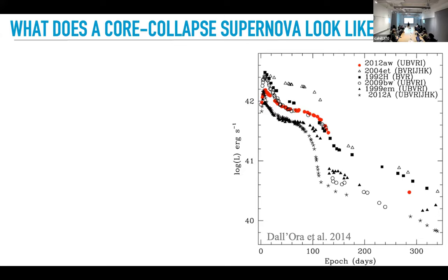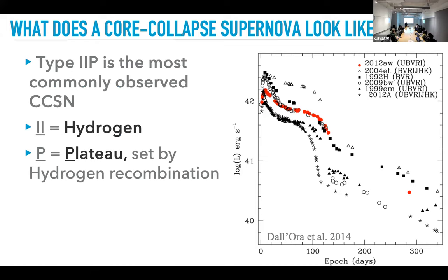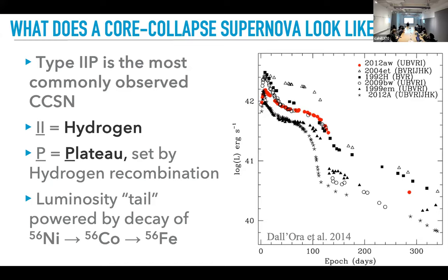So what does a core-collapse supernova look like? The most common type is called a Type IIP — Type II because there's hydrogen in the spectrum, and 'P' for plateau, which is set by recombination of hydrogen as the ejecta expands, cools, and sets a photosphere. At late times there's a tail powered by the decay of nickel-56 to cobalt-56 to iron-56. There's diversity in how long they last and how bright they are, and a lot of my interests are in understanding what sets that diversity.